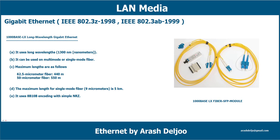1000Base-LX is intended for connecting high-speed hubs, Ethernet switches, and routers in different wiring closets using long cabling runs, and is most commonly used in switch-to-switch configurations. It uses 8B/10B encoding with simple NRZ and operates at long wavelength — 1300 nanometers. There are three wavelength types: short (850 nm), long (1300 nm), and extra-long (1550 nm). With single-mode fiber (8–9 micron diameter), you can achieve 5 km or more of segment length.